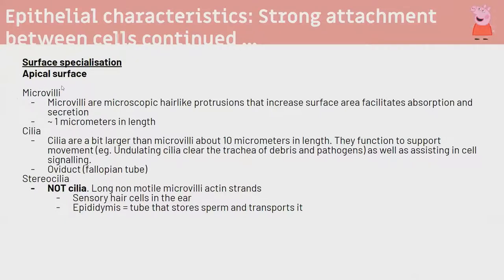On the apical surface, there are specializations. Microvilli are hair-like cytoskeletal protrusions in the small intestine that increase surface area for absorption. Cilia are larger, about 10 micrometres, and function in movement - in the trachea they flush mucus with pathogens to the throat. Cilia are also in ovaries to move eggs. Stereocilia are misnamed; they're long microvilli with sensory functions.